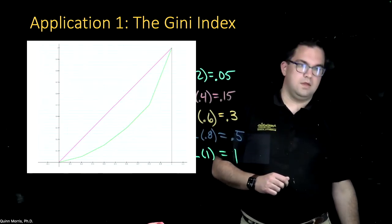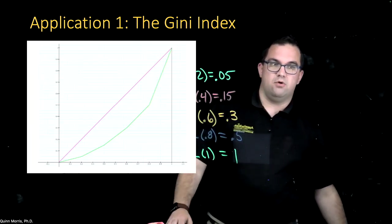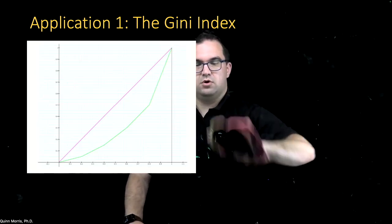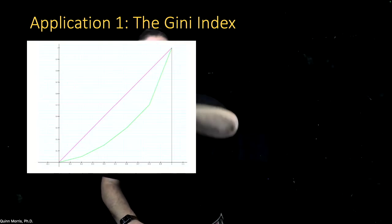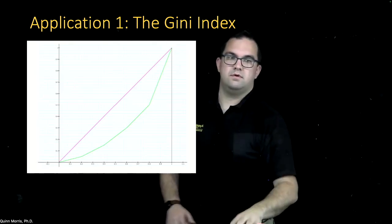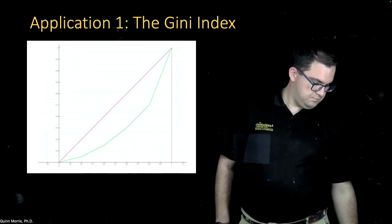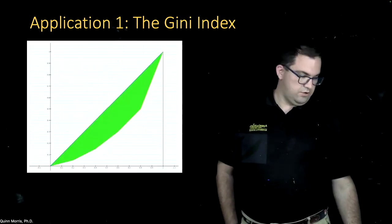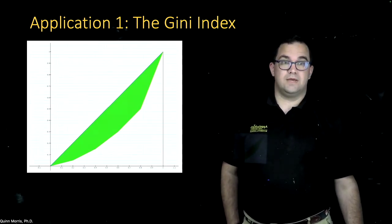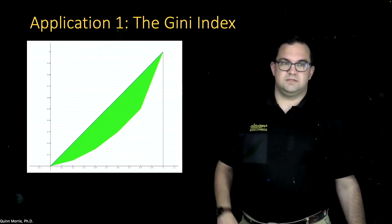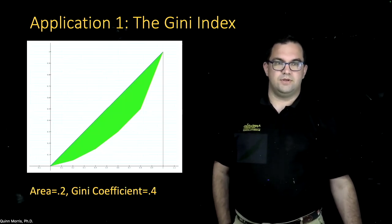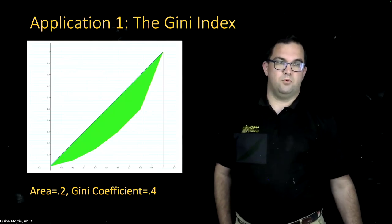Now, if I want to calculate the Gini coefficient, the question becomes: what is the area between the line of perfect equality and my Lorenz Curve in green? To calculate the Gini coefficient, I calculate that area and then multiply by 2. The area of that region is 0.2, and therefore the Gini coefficient is 0.4.